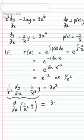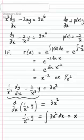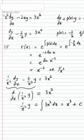On the right-hand side, we've still got 3x squared. So if the derivative of 1 over x squared y is 3x squared, then it follows that 1 over x squared y must be the integral of 3x squared with respect to x, which is x cubed, plus a constant of integration.